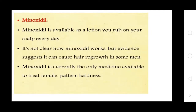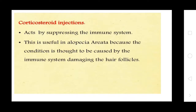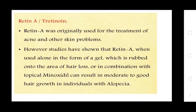Minoxidil is available as a lotion that you rub on your scalp every day. It is not clear how minoxidil works, but evidence suggests it can cause regrowth in some men. Minoxidil is currently the only medicine available to treat female pattern baldness. Corticosteroid injection works by suppressing the immune system. This is useful for alopecia areata because the condition is thought to be caused by the immune system damaging the hair follicles.